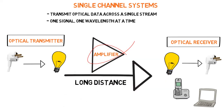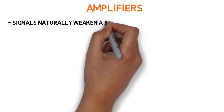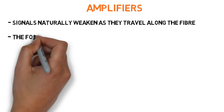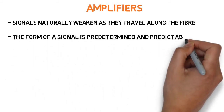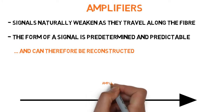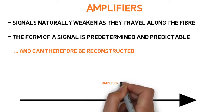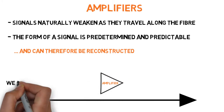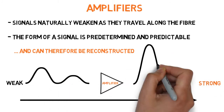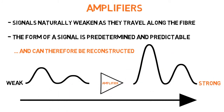This is where amplifiers come in. As we saw in Chapter 2, signals naturally weaken as they travel along the fiber. The form of a signal is predetermined and predictable, and can therefore be reconstructed whenever necessary. Amplifiers are placed at specific intervals along the optical path to transform a weak signal back into a strong one. They are crucial components in long-haul and submarine systems which span incredibly long distances.